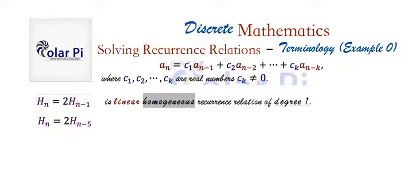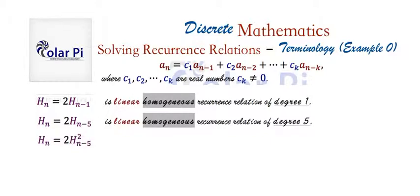So this here is linear homogeneous but of degree five. And a slightly different variety - this here is non-linear and that's because H sub n minus five here is squared.